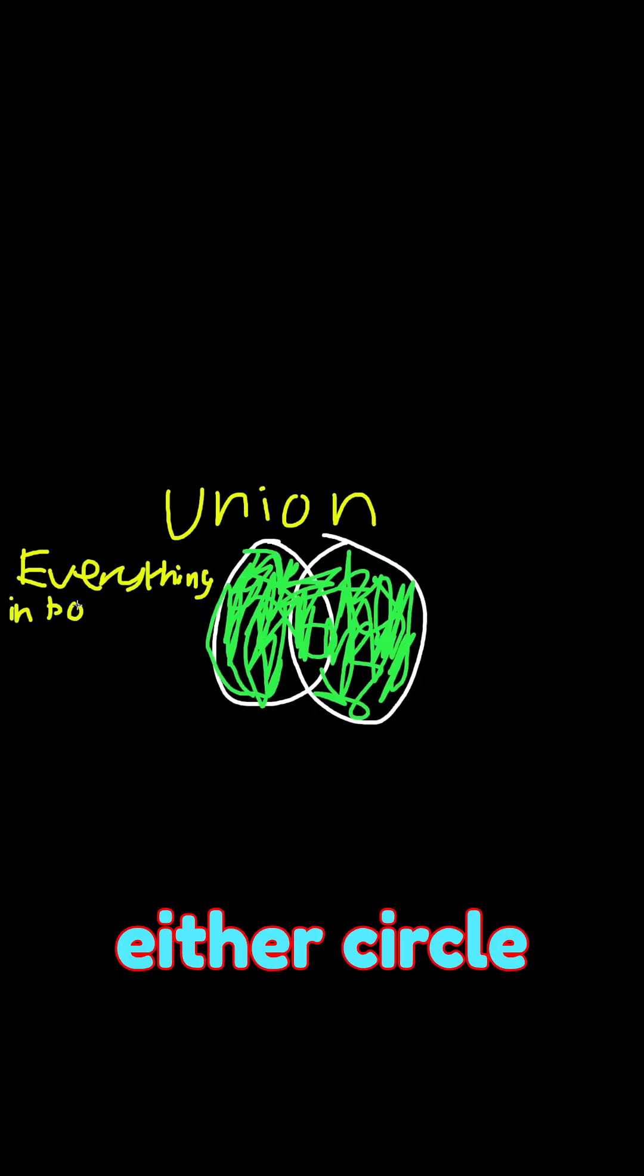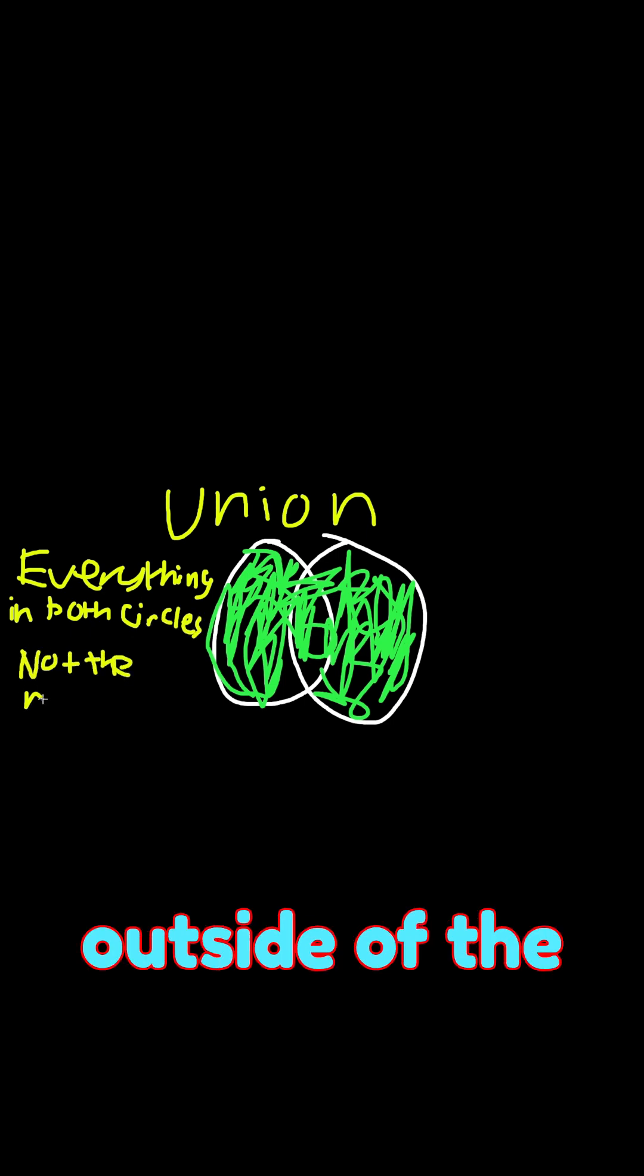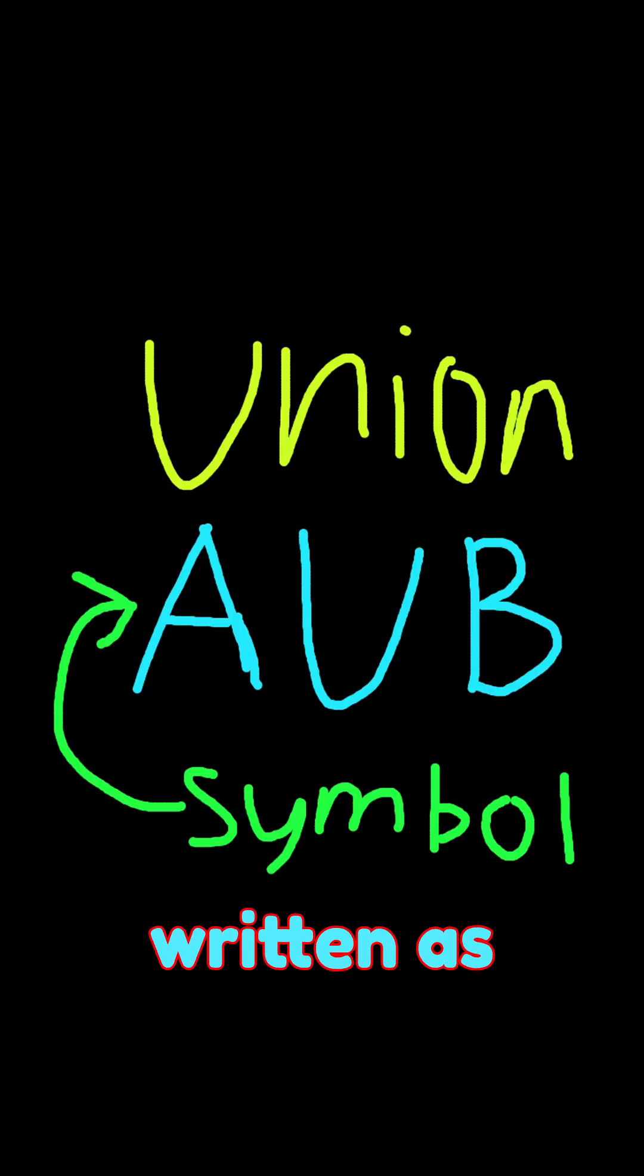And a union is everything in either circle, except for the numbers outside of the circles. It can also be written as this.